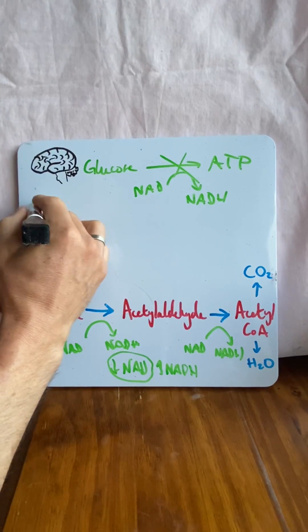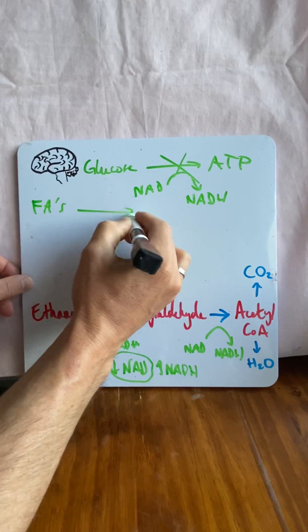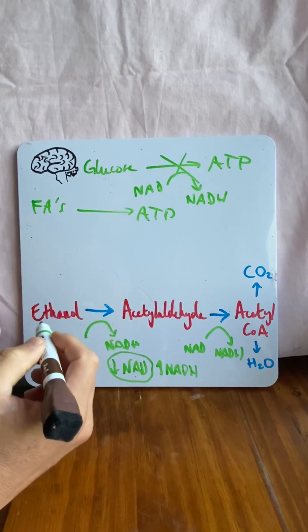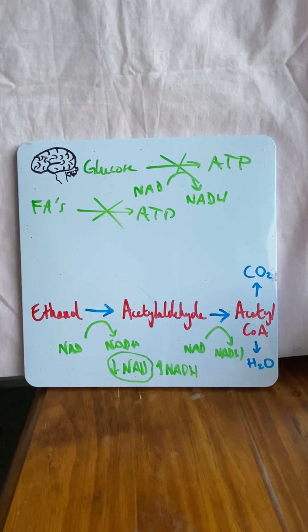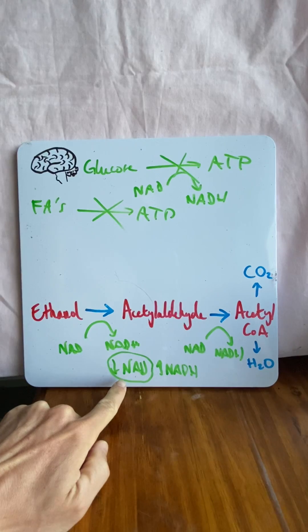Now other tissues of your body are trying to use fatty acids to produce ATP, but the same thing's happening. There's no NAD. So we can't undergo fatty acid oxidation either. So your brain says you are starving. Tells you at 2am to go out and get a greasy kebab. You bring in all these carbs, all these fats to utilize for energy. But again, your NAD is too low.